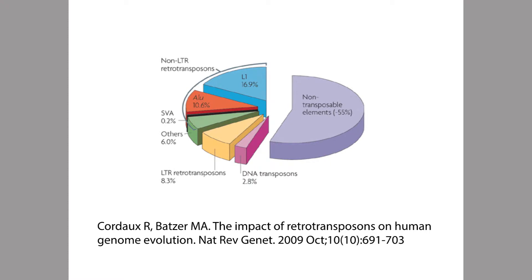There are many different kinds of transposable elements, as you can see from this pie chart here — they come in various abundances. There's one particularly renowned example called ALU, highlighted in red on the pie chart. ALUs actually occur more than a million times in the genome, and about 11 percent of the human genome sequence is covered by these things called ALUs.